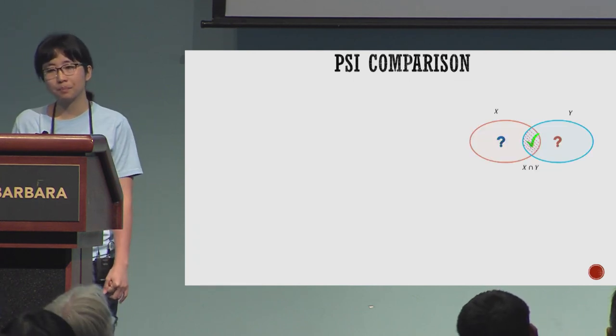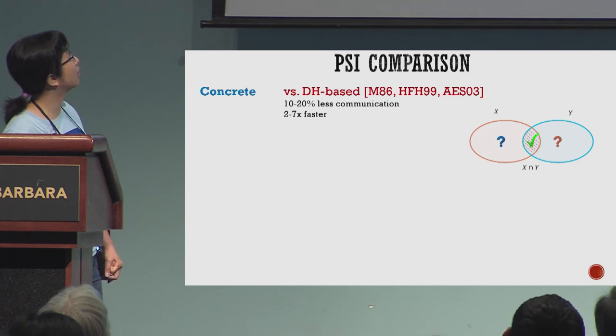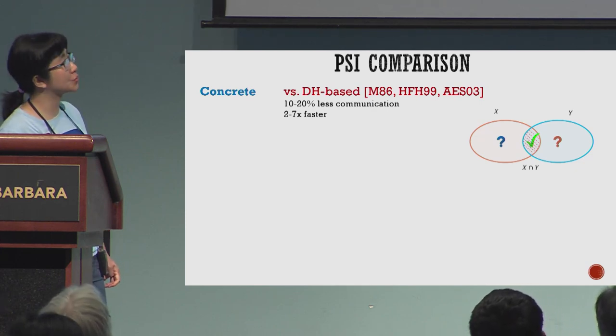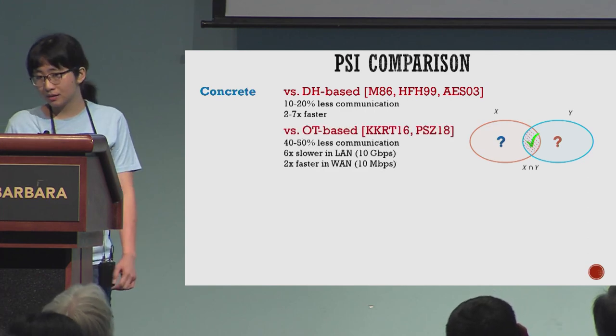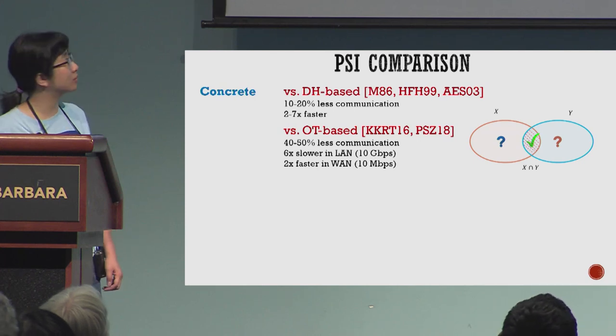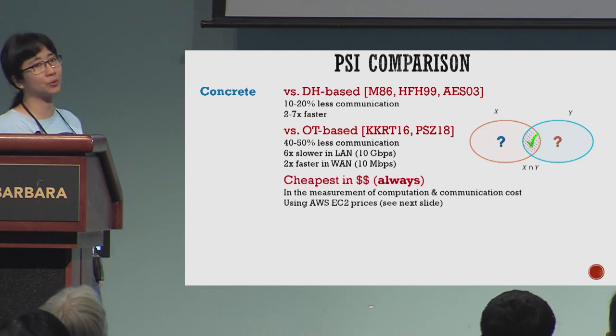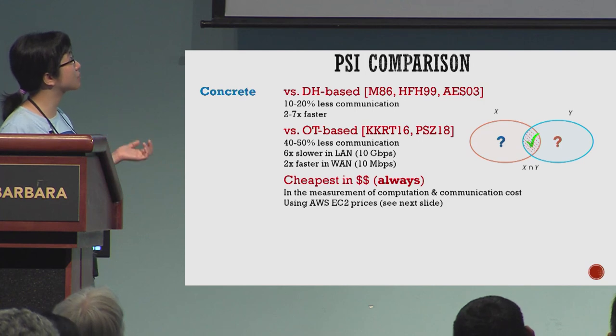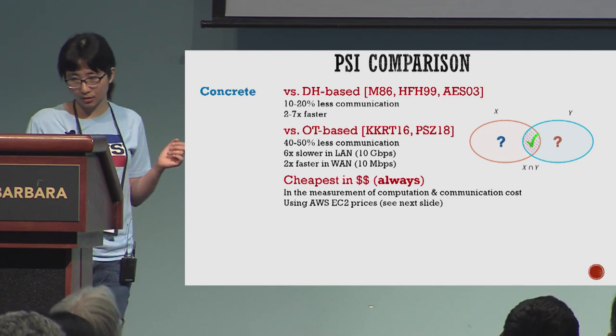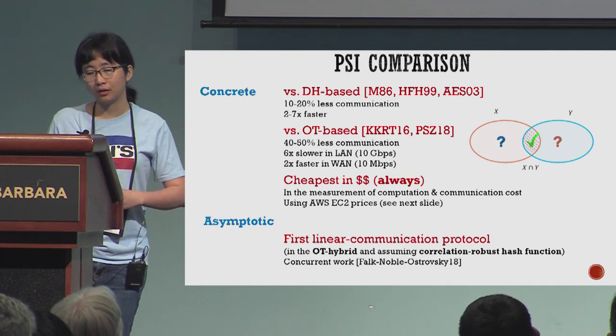In summary, compared to Diffie-Hellman based PSI, our protocol has 10 to 20 times less communication and we have 2 to 7 times faster running time. Compared to OT-based PSI, our protocol has 40 to 50% less communication. We're 6 times slower in LAN setting but 2 times faster in WAN setting. But our protocol is the cheapest in the measurement of computation and communication costs, and we use Amazon Web Service pricing for this. Our protocol is the first linear communication protocol in OT hybrid and one-way hash functions. The work of Kolesnikov and Ostrovsky is concurrent work.